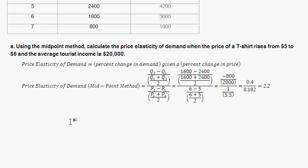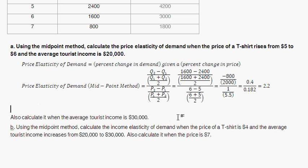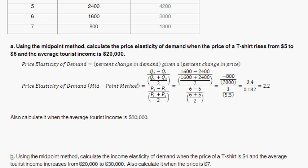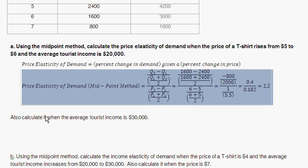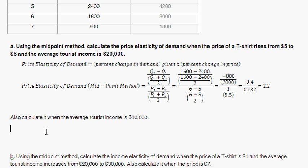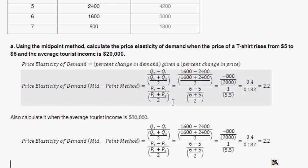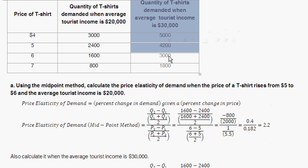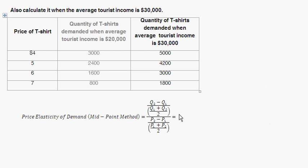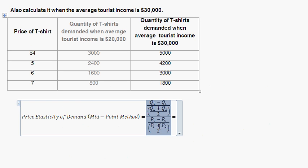What that means: given an increase in price by 1%, we expect the percent change in demand to be a decrease of 2.2% — a 1% increase in price leads to a 2.2% decrease in quantity demanded. Now let's move on to the second part of Part A: calculate the price elasticity of demand given a tourist income of $30,000. We're going to use the same equation but with tourists earning $30,000.